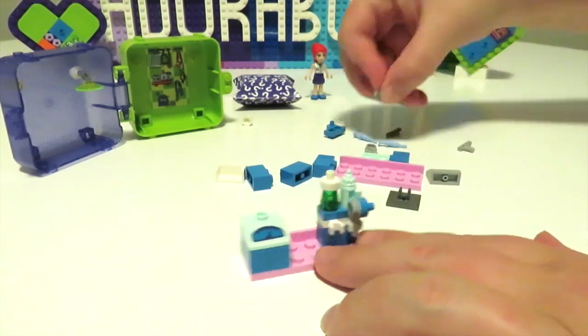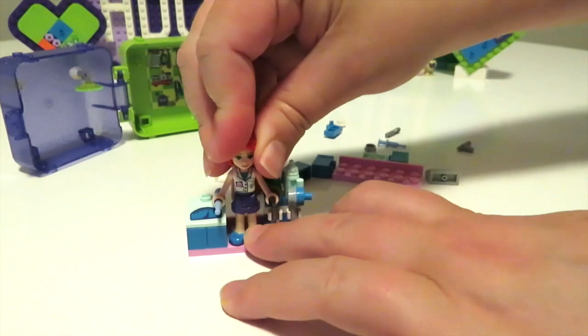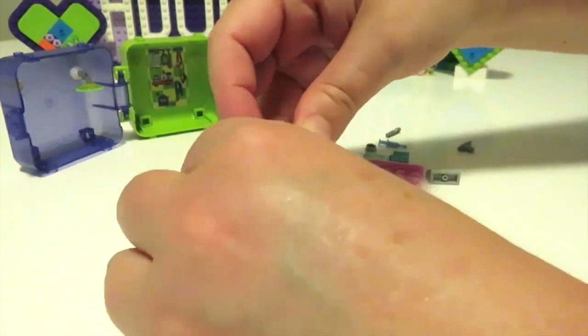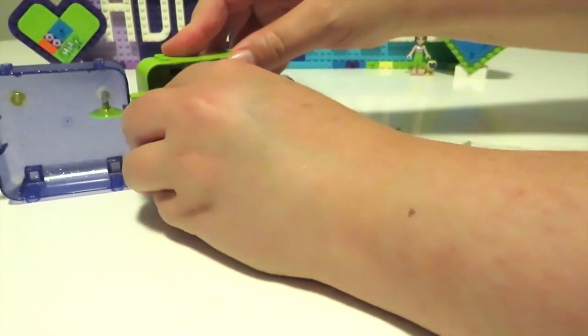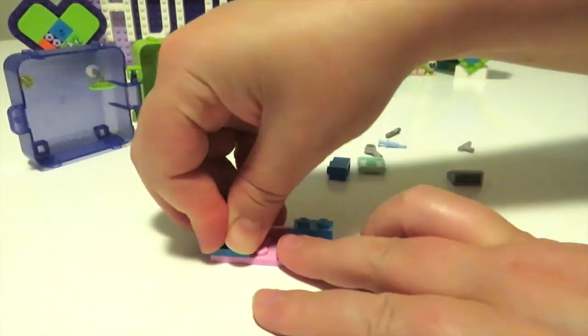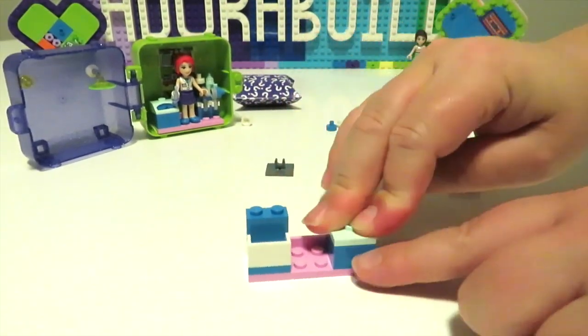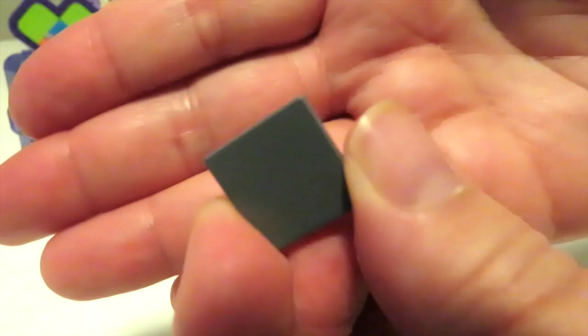And then we're just putting some veterinarian equipment together on that little stand. And we place Mia on that side too. We then start building up the second little insert. So we just add in a little table area, and then we also add in what appears to be a little TV screen monitor as well.